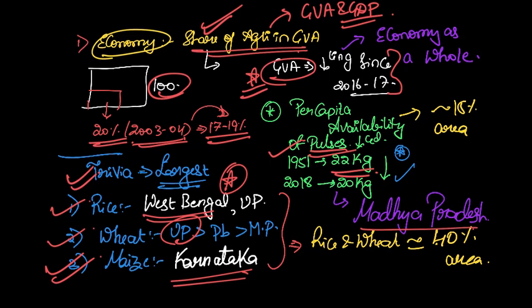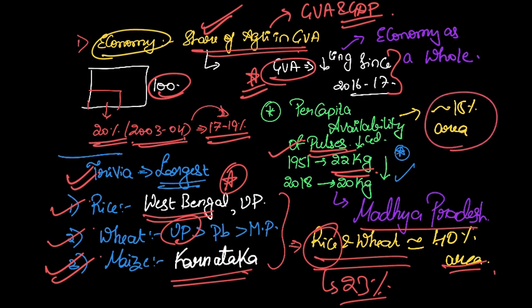Now if you take a look at the whole area that is under cultivation, rice and wheat together occupy 40 percent of the area, with rice occupying somewhere around 23 percent. And if you compare it with the pulses, it is just 15 percent of the area. So that is the reason why we are talking about protein security.